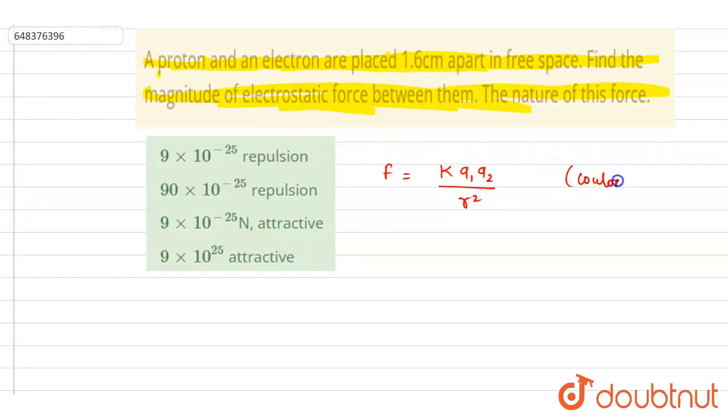So if you see, you can just put the value of the charge on the proton and the electron. So we know that the charge on the proton and charge on the electron are the same, and it is 1.6 times 10 to the power minus 19 coulomb, right? So this is the charge.